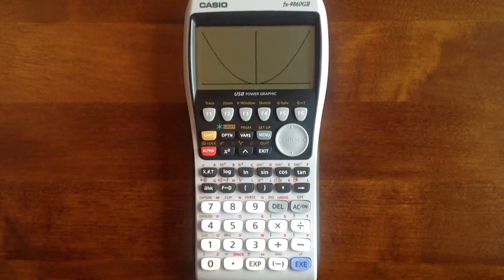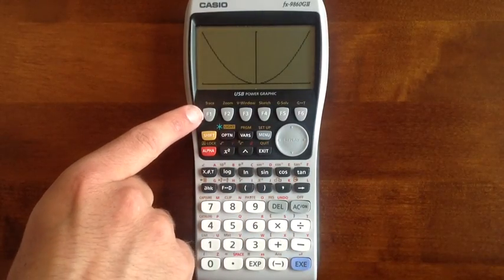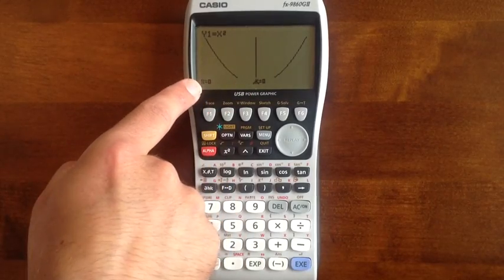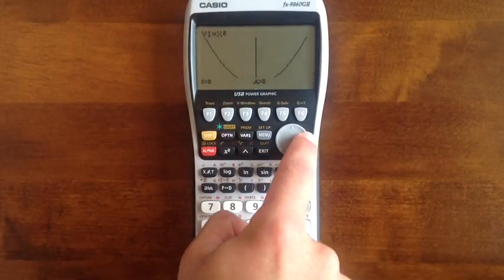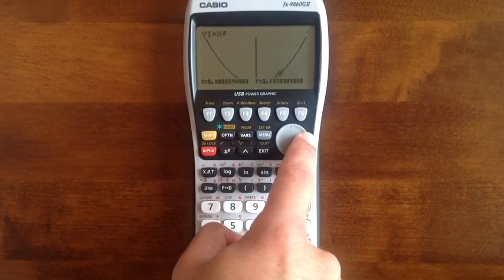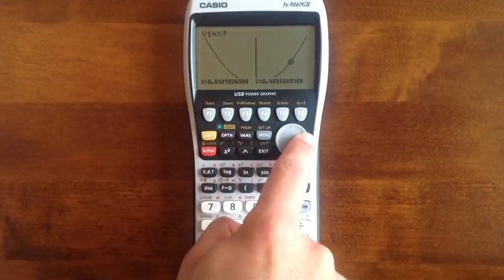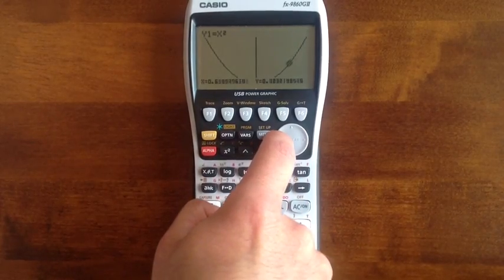Going back to the graph, another thing that can be useful at times is this trace button. Pressing that has placed a cursor at the bottom and also says x equals 0, y equals 0. Then moving left and right with the arrows, you'll see this little cursor moves along and it shows you the values of x and y at that point and obviously they can change and you can move left and right.